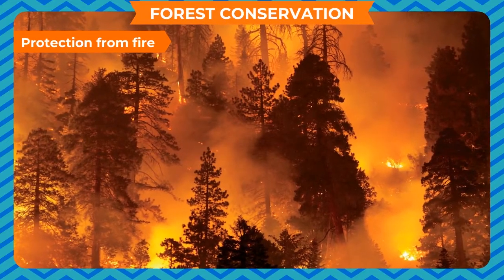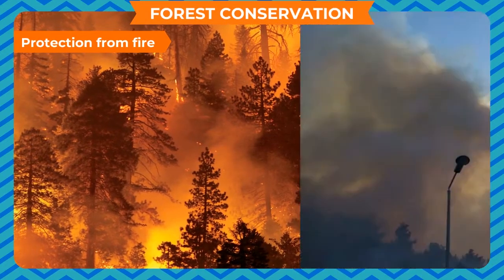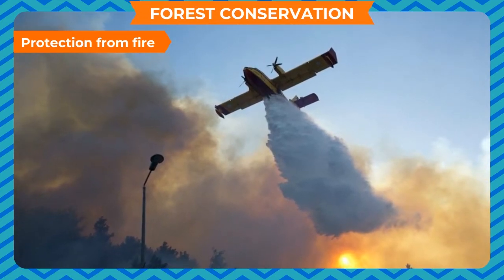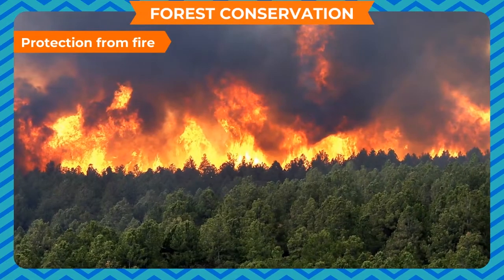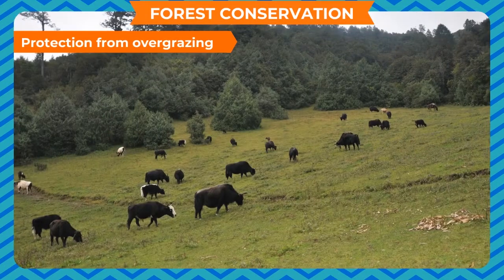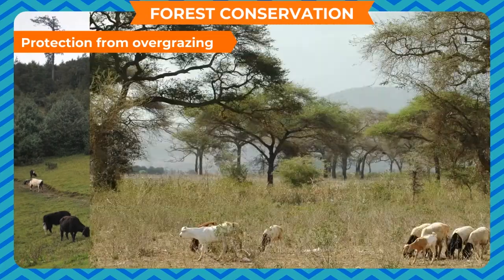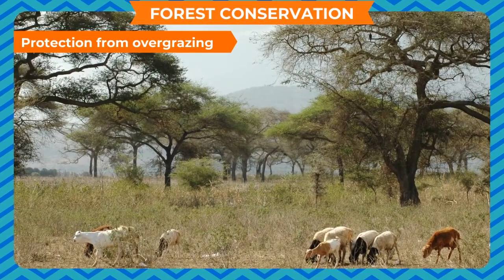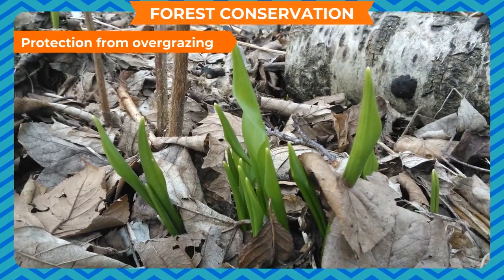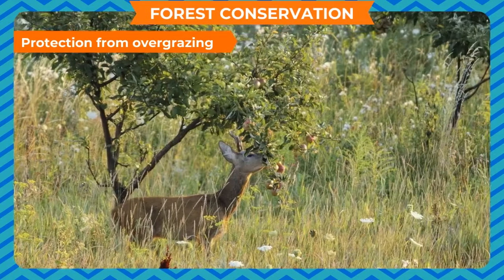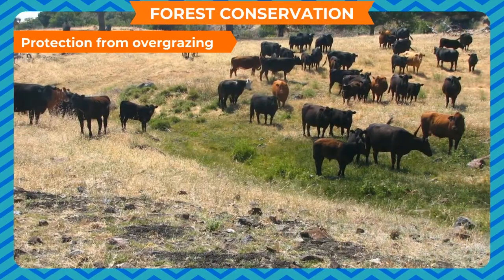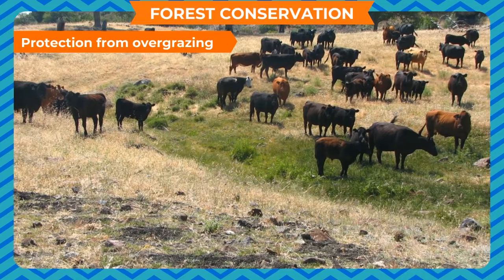Protection from fire: Trees in forest areas are destroyed by fire every year. Forest fires are controlled by spraying fire extinguishing solutions from aircraft or by changing the direction of wind using strong blowers. Protection from overgrazing: Overgrazing by cattle not only destroys grasslands but also trees in forests. Young plants are either eaten up or trampled, and roots and trunks are injured. Overgrazing must therefore be prevented to save forests.